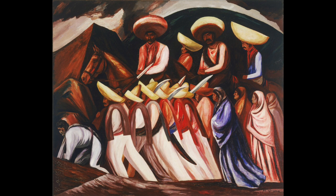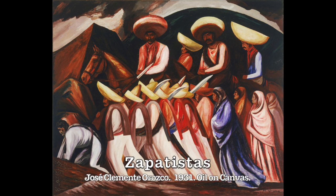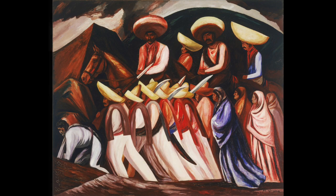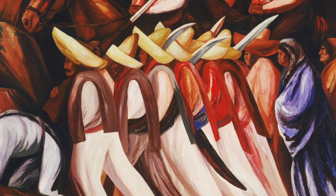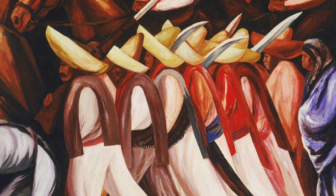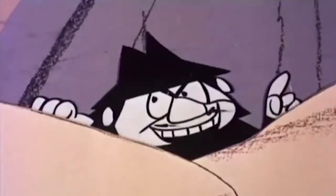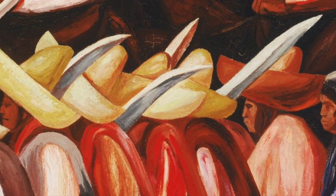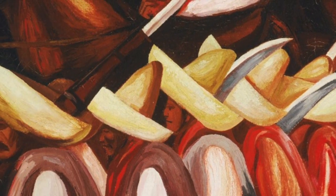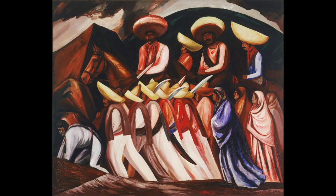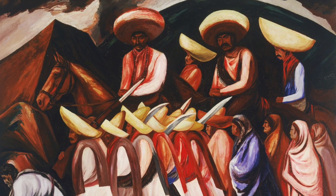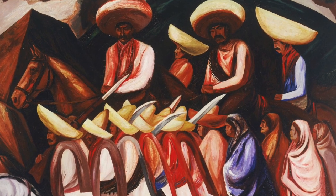Strong rhythm dominates Jose Clemente Orozco's Zapatistas. The line of similar, diagonally placed figures grouped in a rhythmic sequence expresses the determination of oppressed people in revolt. The strong diagonals of the hat brims, bayonets, and swords all contribute to the feeling of the action. The diagonal lines really dominate the entire composition. These repetitions of diagonal lines as well as the consistent color palette give the artwork a great deal of rhythm.